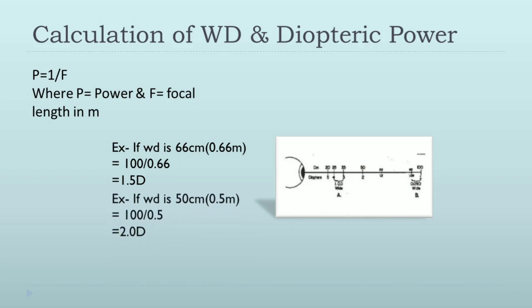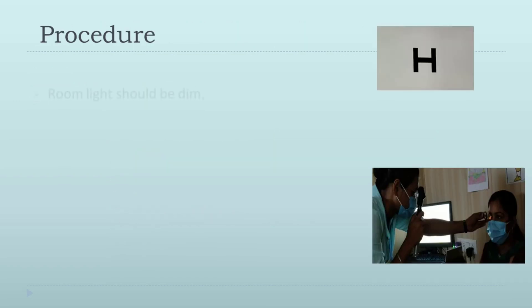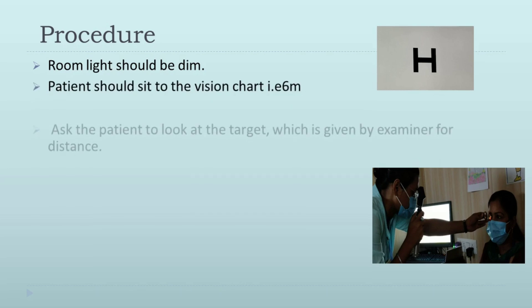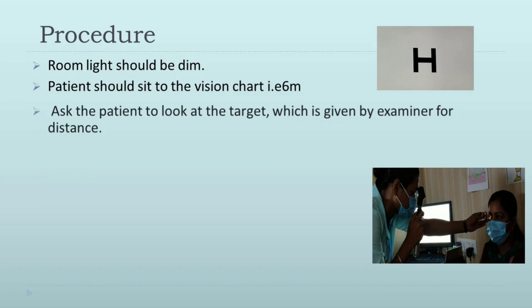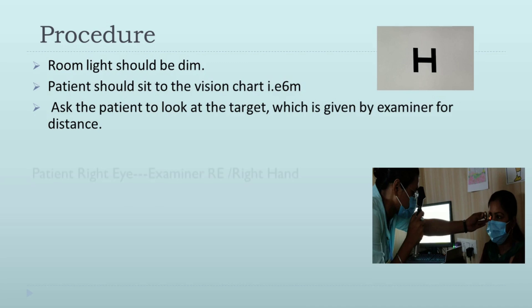Now coming to the procedure of retinoscopy. The room light should be dim. The patient should shift to the vision chart at 6 meters. Ask the patient to look at the target which is given by the examiner for distance.